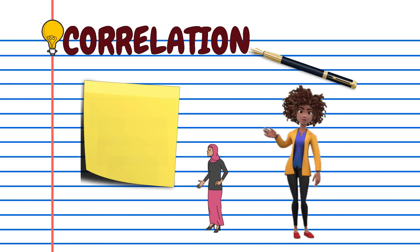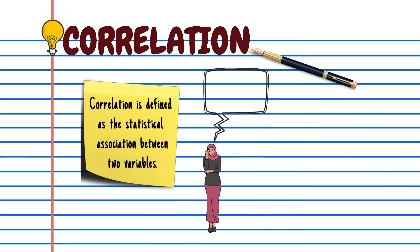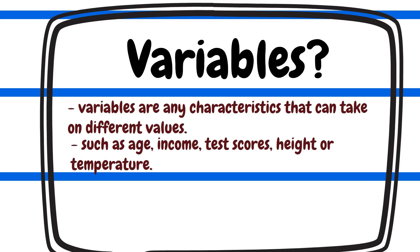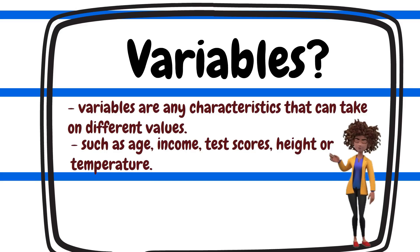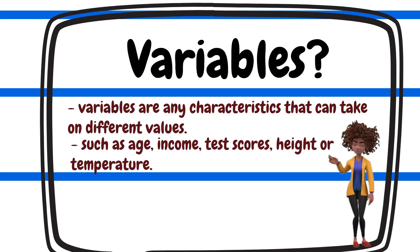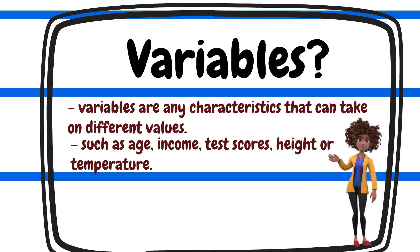Correlation is defined as the statistical association between two variables, or any abstract idea that can be described in measurable terms. In research, variables are any characteristics that can take on different values, such as age, income, test scores, height, or temperature — anything that can vary can be considered a variable.